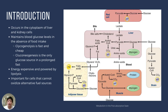Gluconeogenesis is important for cells that cannot oxidize alternative fuel sources. A major example would be red blood cells, which in their development in the bone marrow have extruded almost all organelles to make space in the cytoplasm for hemoglobin. Therefore, mature red blood cells only have hemoglobin in the cytosol, and only metabolic processes occurring in the cytosol — like glycolysis — can occur. Red blood cells can only utilize glucose through glycolysis to produce their energy.